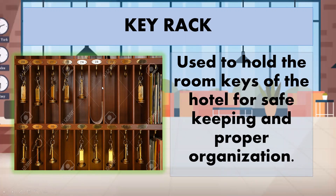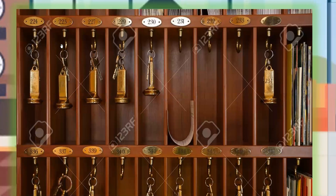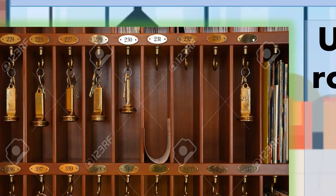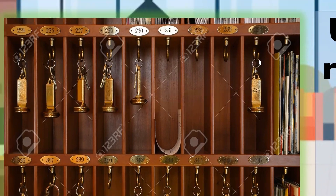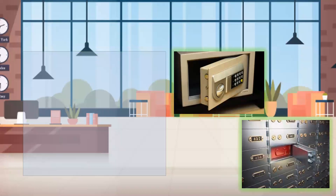In modern hotels, traditional keys like this are no longer common. But let's take a closer look. If you would notice, at the top there are different numbers that correspond to the room numbers in the hotel, and a hook where the key should be placed. For example, the number 234 — here is the key for room 234, and the key chain also indicates that it is for room 234.